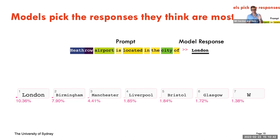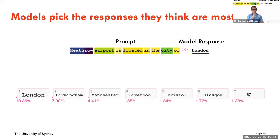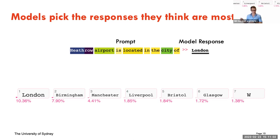The word 'Heathrow' is what the model is paying the most attention to, then 'city,' then 'airport.' So Heathrow + city = London is probably the most likely response. Interestingly, the next responses it gives are other cities in the United Kingdom — which are nowhere close to London — but they're statistically more probable than, say, the letter W.